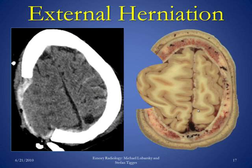Here is an example of external herniation. On this image, the patient underwent a craniectomy, meaning removal of part of the skull. As a result, the path of least resistance becomes the area where there is no skull, and the brain — if it is edematous or swollen, or if there is some kind of mass effect — tends to herniate through that defect. It is also indicative of persistent mass effect.